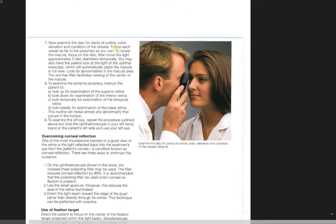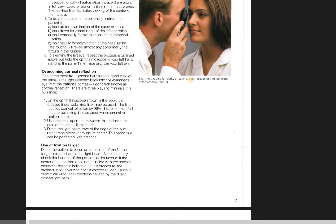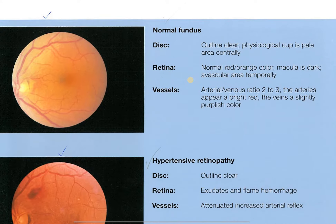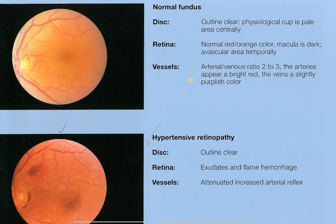Here we are closer — this is about the distance you're going to be as you look inside their eye. Here's a normal fundus: the outline is clear, the physiological cup is pale and of a normal size. You've got that normal red-orange color, the macula area is dark, and the vascular supply looks good. The arteries and veins have a two-to-three ratio where arteries appear bright red and veins have that slight purplish color.